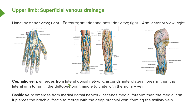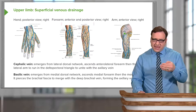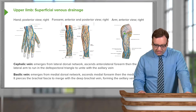The cephalic vein is formed from the lateral dorsal network and ascends the anterolateral aspect of the forearm. We can see it running up the lateral aspect of the forearm and continuing up into the arm, running along the lateral side. It then pierces the deltoid fascia — so while these veins run superficial to the deep fascia, ultimately they must pierce the deep fascia to pass in and form the axillary vein.